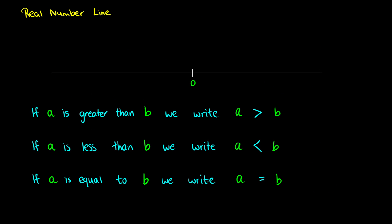All of these numbers make up the real numbers, and these are one-dimensional, which means we can plot them on a line — they have an order. If I take the number 2, positive numbers go to the right of 0. If I have a number like negative 7, negatives go to the left of 0. Numbers on the right are considered greater, and numbers on the left are lesser or smaller numbers.